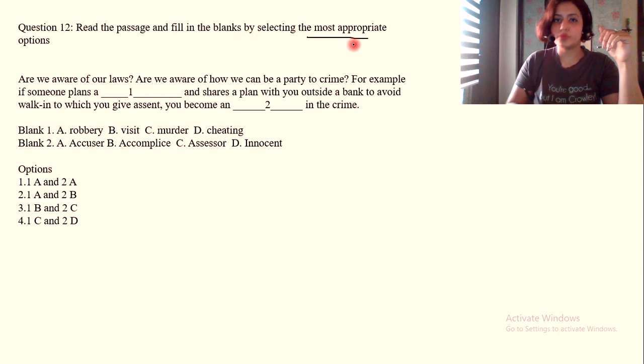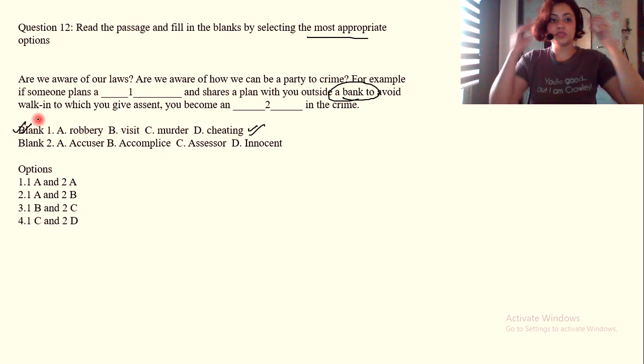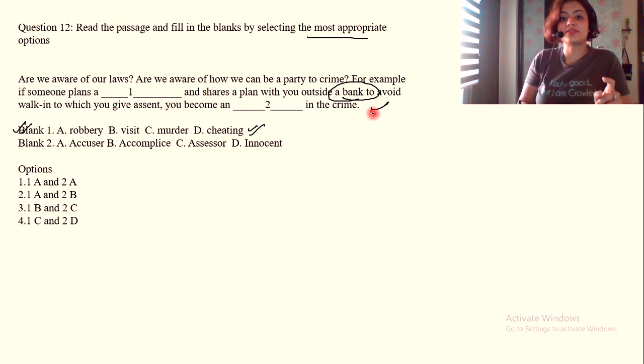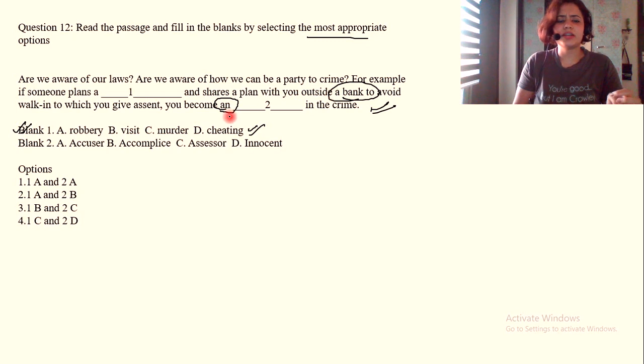Read the passage and fill in the blanks by selecting the most appropriate options. Are we aware of our laws? Are we aware of how we can be a party to crime? For example, if someone plans a dash and shares a plan with you outside a bank. What could be planned outside a bank? We'll see in blank one's options and realize how to eliminate using this context. Outside a bank, to avoid walk-in, to which you give assent, you become a dash in the crime. What could be done in a bank? Robbery, yes. Visit, no. Murder, no. Cheating, no. So first one is A.